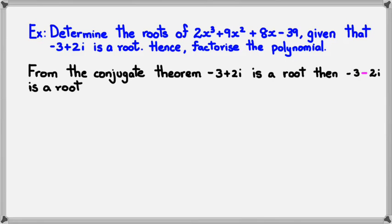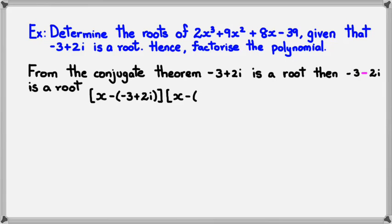With that in mind, we know this is x cubed, which means it's going to have three factors. The first factor is going to be x minus (minus 3 plus 2i). The second factor is x minus the conjugate version, which is (minus 3 minus 2i). And finally, the last factor, which we don't yet know, is going to be ax plus b.